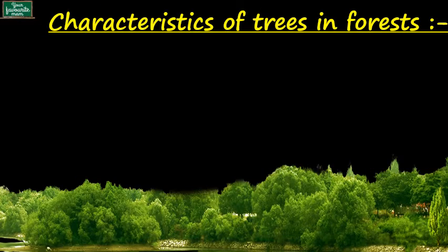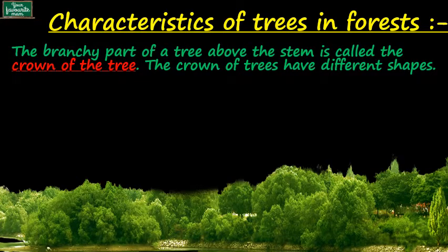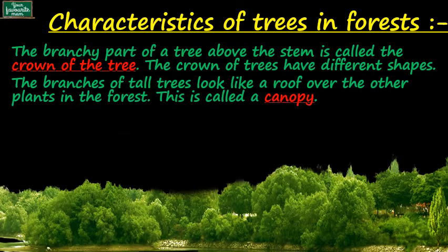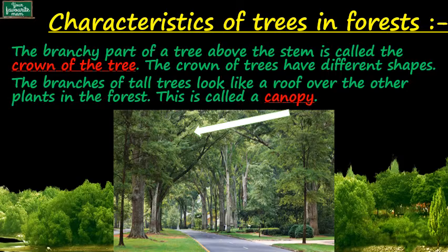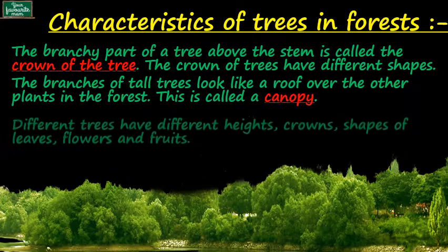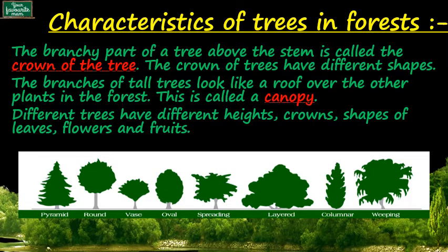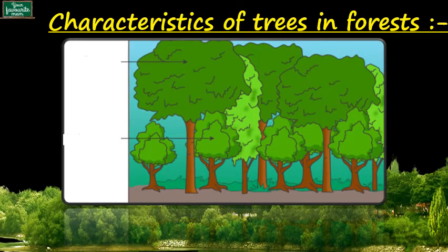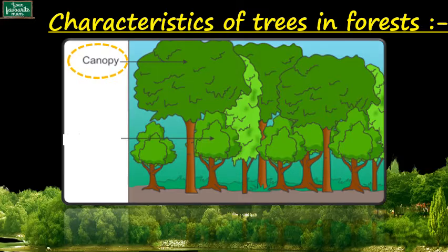Now let's talk about certain characteristics of trees in the forest. The branchy part of a tree above the stem is called the crown of the tree. The crown of the tree can have different shapes. The branches of tall trees look like a roof over the other plants in the forest — this is called a canopy. Different trees have different heights, crowns, shapes of leaves, flowers, and fruits. The uppermost branches and leaves of tall trees, which act as a roof over the forest ground, is called the canopy. It is the highest layer of vegetation in the forest. The different horizontal layers formed due to different types of crowns in the forest is called an understory.